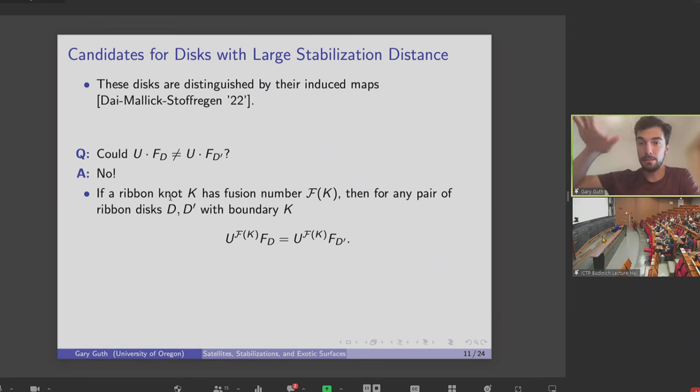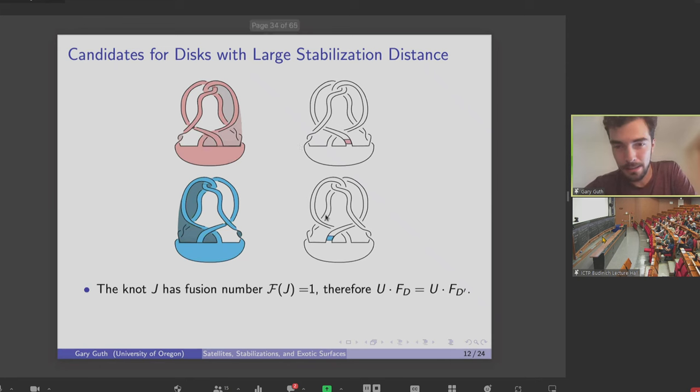And this follows from this general fact, that if I have a ribbon knot K, so a knot that bounds a ribbon disk in the four ball, then I can consider its fusion number, which is the minimal number of bands that appear in a ribbon disk for K. And then it turns out if I have any two ribbon disks with boundary K, the maps always are going to be equivalent after I multiply by U to the fusion number.